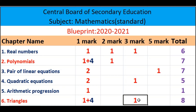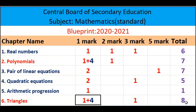From the chapter Triangles, which is also one of the important chapters, one question of one mark and one question of three marks will be asked. One situational based or case study type question will also be asked, with five sub-questions out of which you need to choose four. Each sub-question carries one mark, so a total of eight marks will be asked from Triangles.